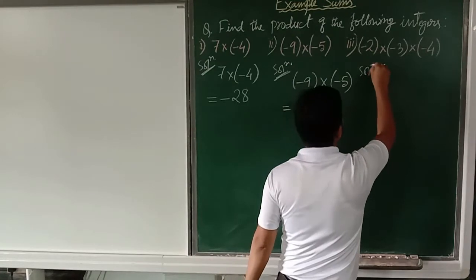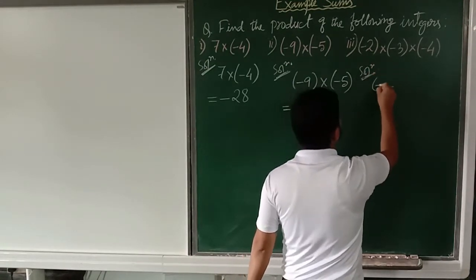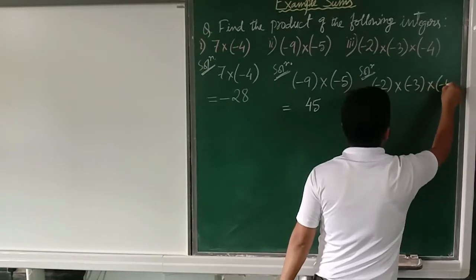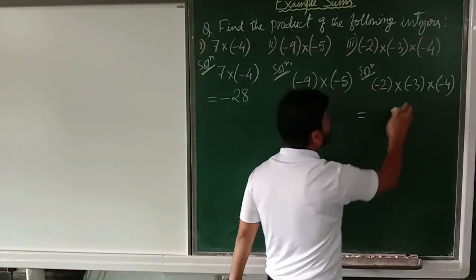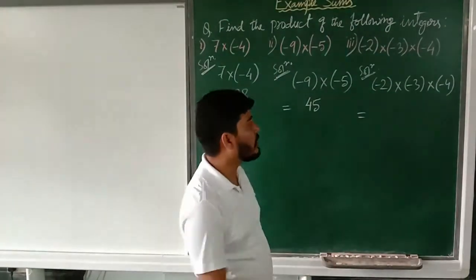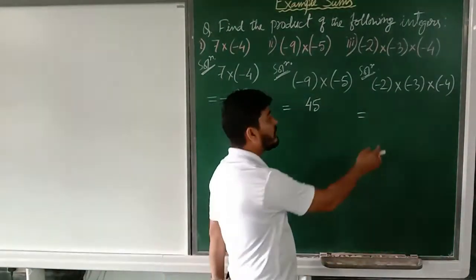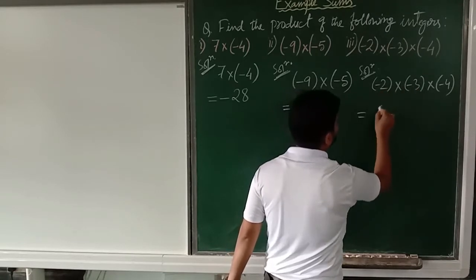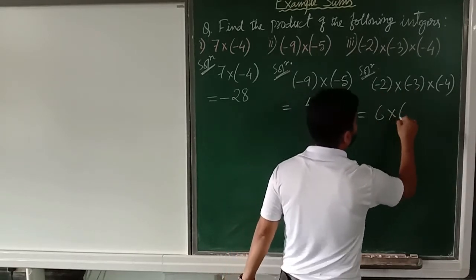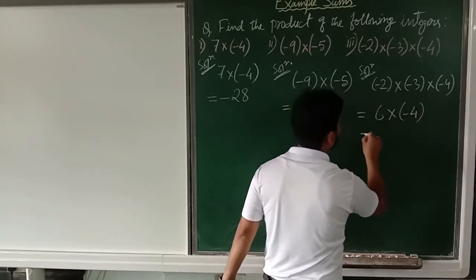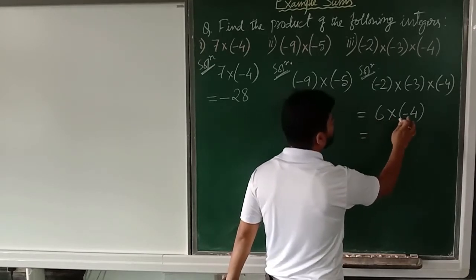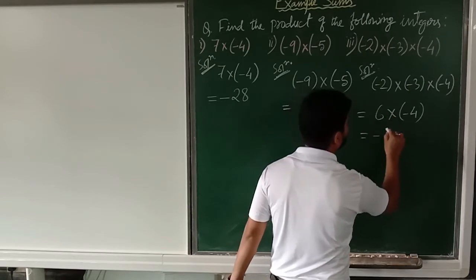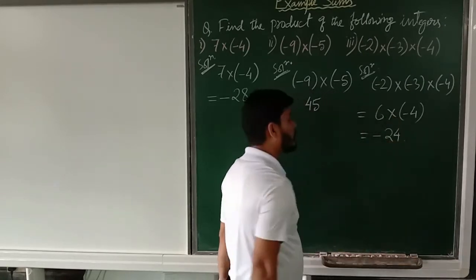Let us see one more example. It is minus 2 into minus 3 into minus 4. There are 3 integers and all are negative integers, so let us take 2 at a time. Minus into minus is plus, and 2 threes are 6. Then 6 into minus 4: plus into minus is minus, and 6 fours are 24, so the answer is minus 24.